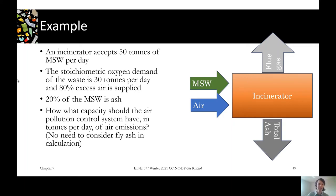20% of the MSW coming in is ash, and in this one it's simplified—we just have a total ash. We haven't separated into fly ash and bottom ash. The question is, what capacity should the air pollution control system have in tons per day of air in order to treat the flue gas that will be produced by this system?